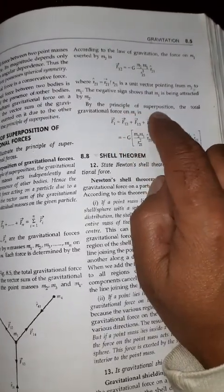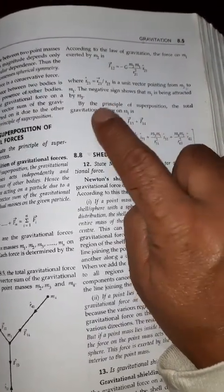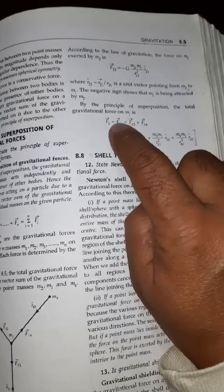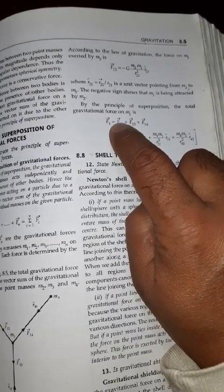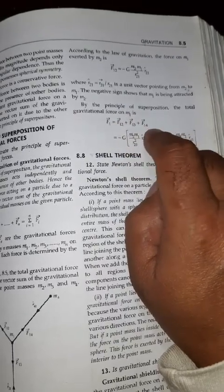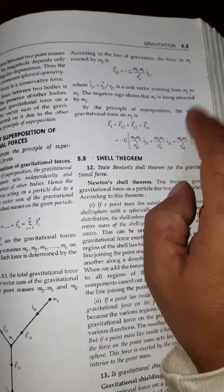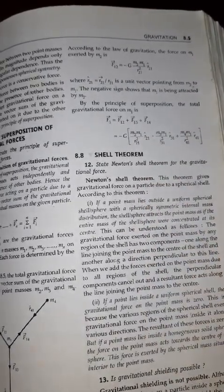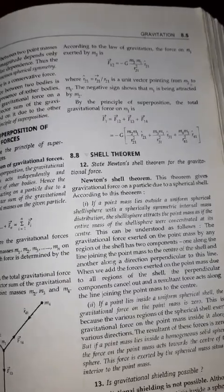So by the principle of superposition, the total gravitational force on M1 is vector sum of forces on M1 by 2, by 3, by 4. So I will add them all together. So this is all about the shell theorem, that is, shell theorem, you know, that is like an empty ball, shell theorem, understood.